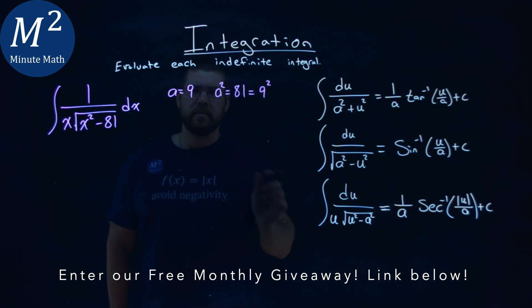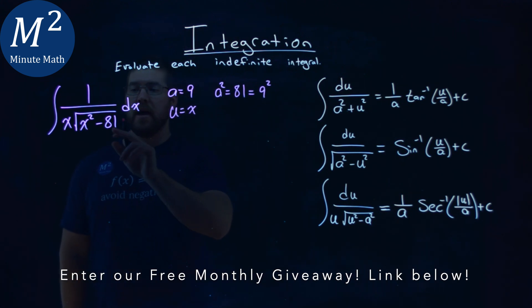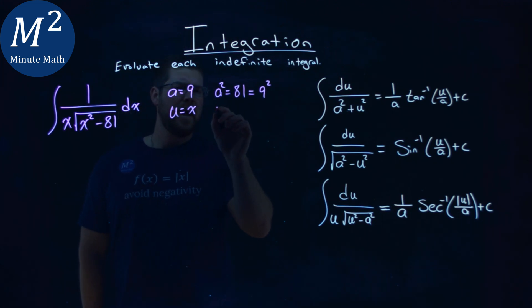The rest fits pretty easy. u is just equal to x, lines up pretty easily here, and so u squared is equal to x squared.